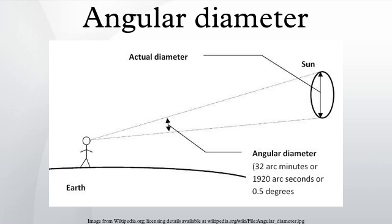The angular diameter or apparent size is an angular measurement describing how large a sphere or circle appears from a given point of view. In the vision sciences it is called the visual angle.